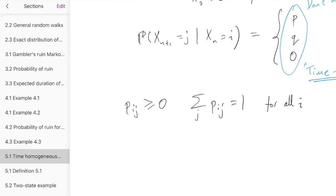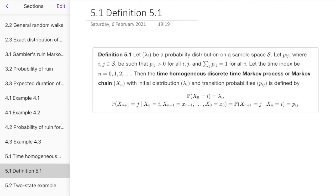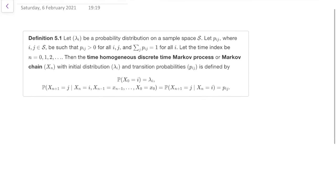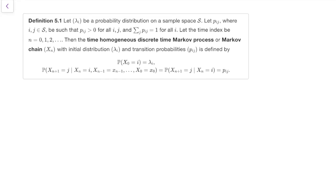So if we put all these together, we can get our main definition of a discrete time Markov chain. And that definition is this, definition 5.1. Let lambda i be a probability distribution, so that's going to be our initial distribution.